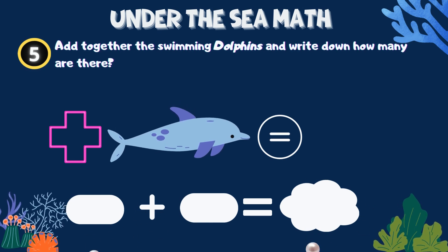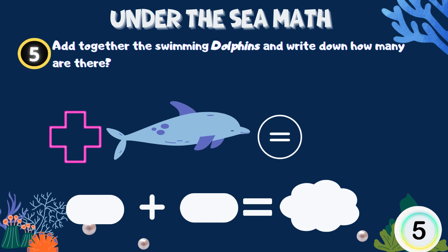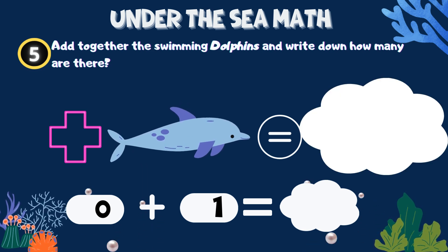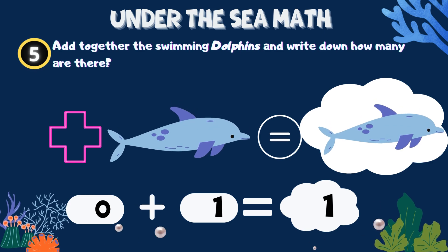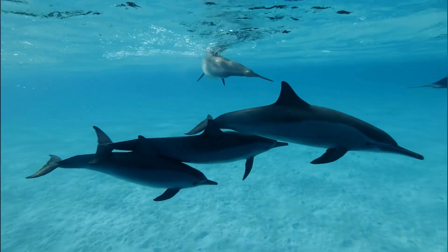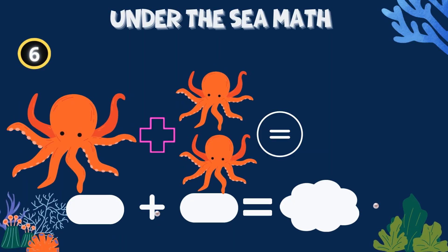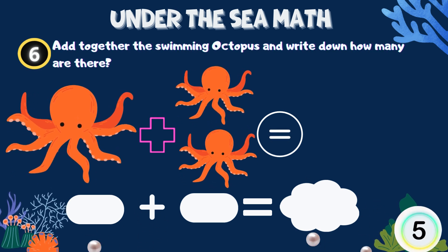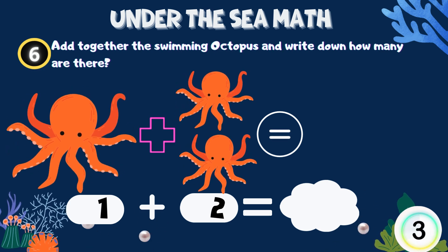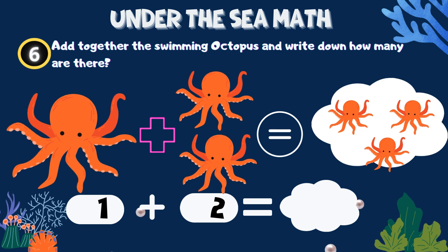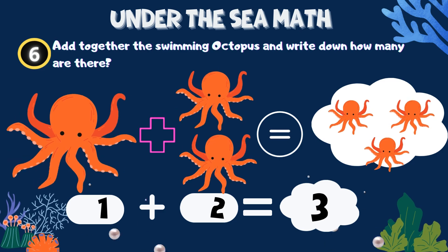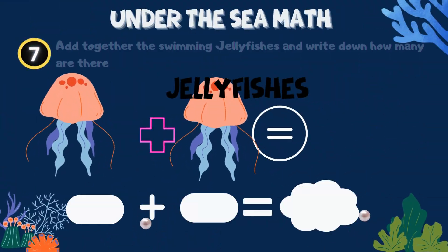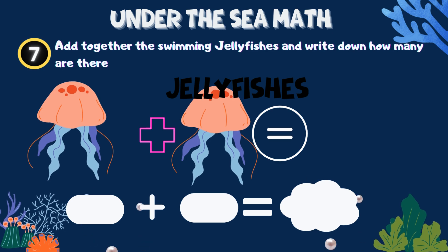Add together the swimming dolphins and write down how many there are. Add together the swimming octopus and write down how many there are. Add together the swimming jellyfishes and write down how many there are.